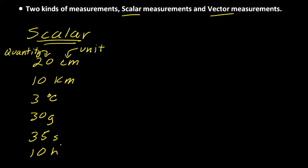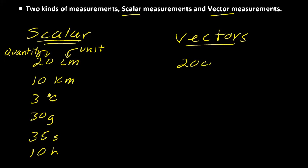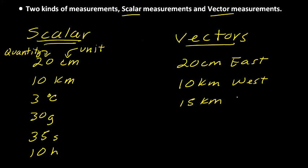So, what separates them from vector measurements? Watch this. Here are some examples of vector measurements. An example of a vector measurement might be something like 20 centimeters east. How about 10 kilometers west? How about 15 kilometers up? Or 30 newtons — which is a unit of force, a push or a pull — 30 newtons left.